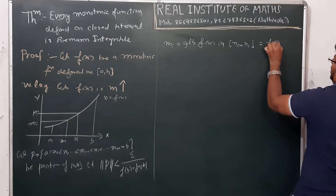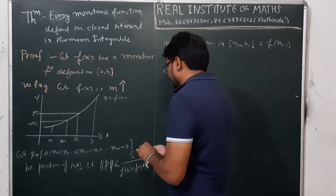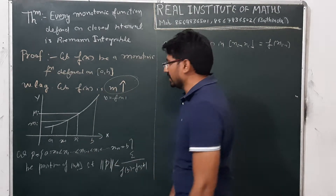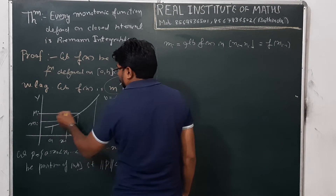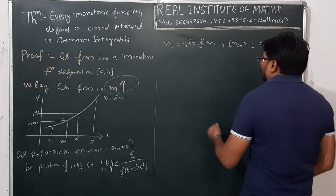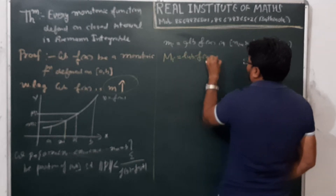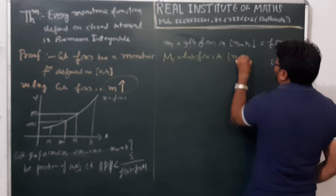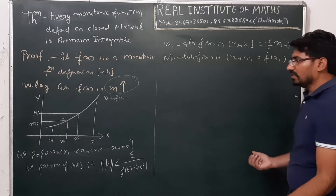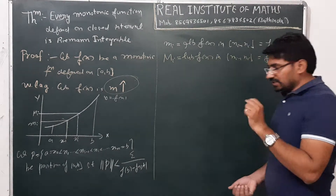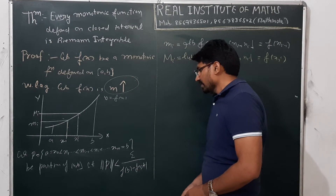Since the function is monotonically increasing, small m_i equals f(x_{i-1}) and capital M_i equals f(x_i). This is straightforward because the minimum on the subinterval occurs at the left endpoint and the maximum at the right endpoint.